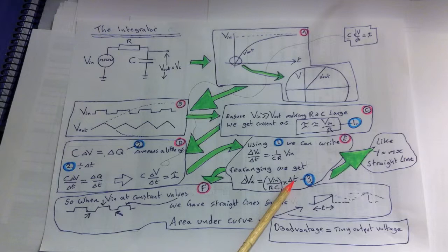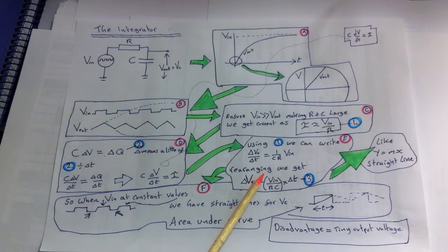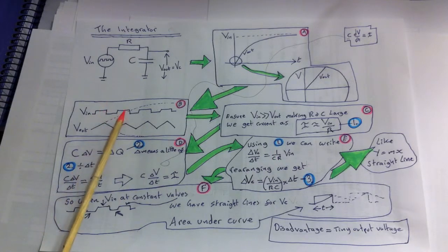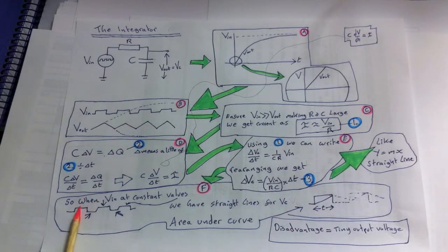When Vin is a constant as at the top of our square waves, so here we've got constant values and at the bottom constant values, we will get straight lines for Vout so we'll get a straight line going up and a straight line coming down.